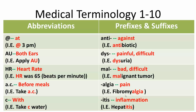The suffix '-itis' means inflammation — for example, hepatitis, which is inflammation of the liver. That's pretty much it. You can now pause the video and review the words with their meanings.